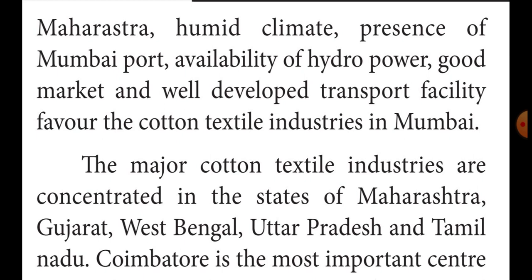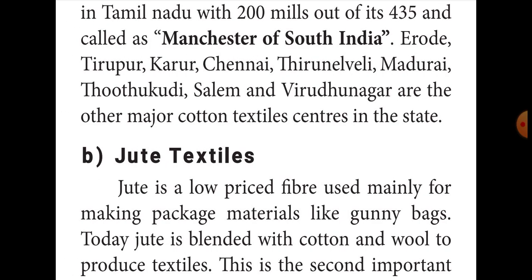Other cotton-producing states include Gujarat, West Bengal, Uttar Pradesh, and Tamil Nadu. In Tamil Nadu, Coimbatore is the most important center for cotton textile production. India has 435 cotton mills, of which 200 are in Coimbatore, Tamil Nadu. So Coimbatore is called the Manchester of South India, while Mumbai is called the Manchester of India.